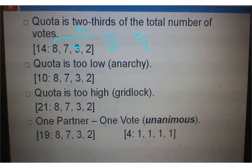Next example, quota is too low. So we have anarchy. 8 plus 7, 15. So that's 20.